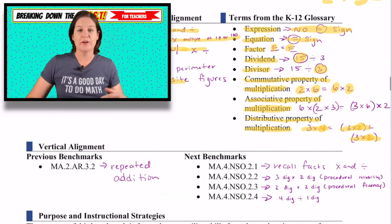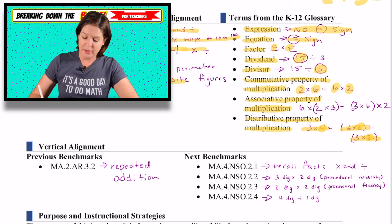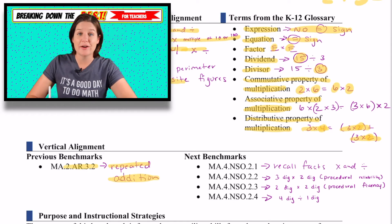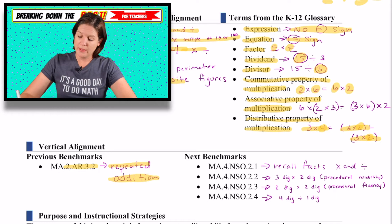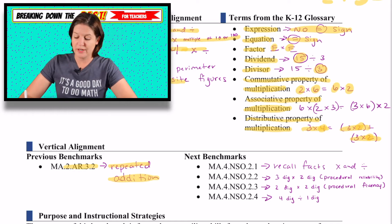Where are they coming from in second grade? They are coming from repeated addition, which is 2.AR.3.2. And then they're going to fourth grade, and there's a lot of multiplication and a lot of division in fourth grade.